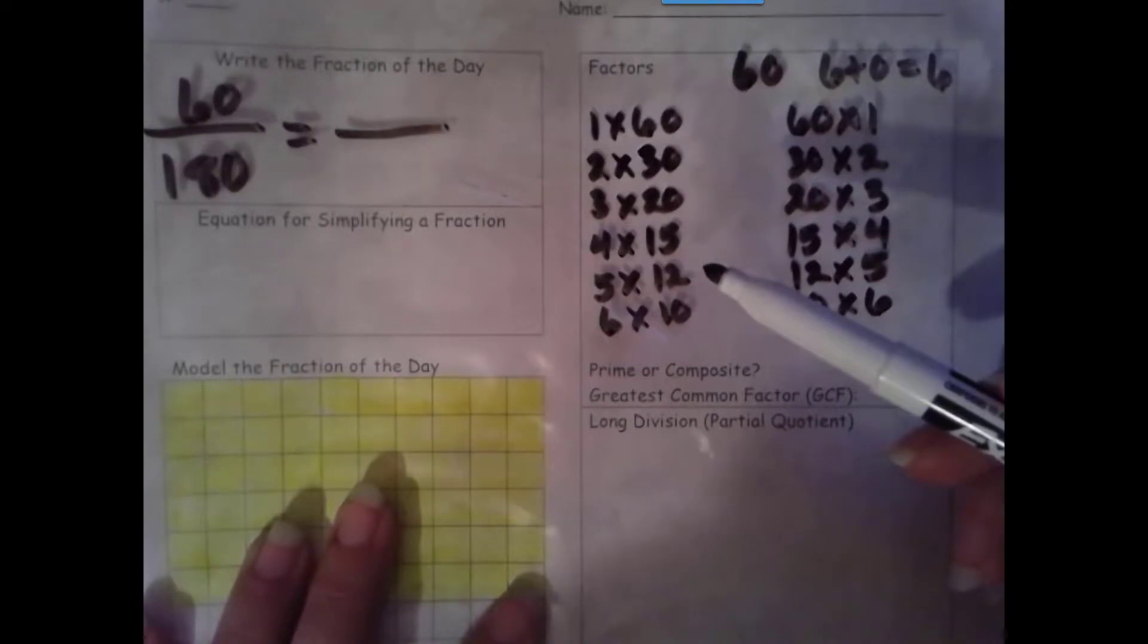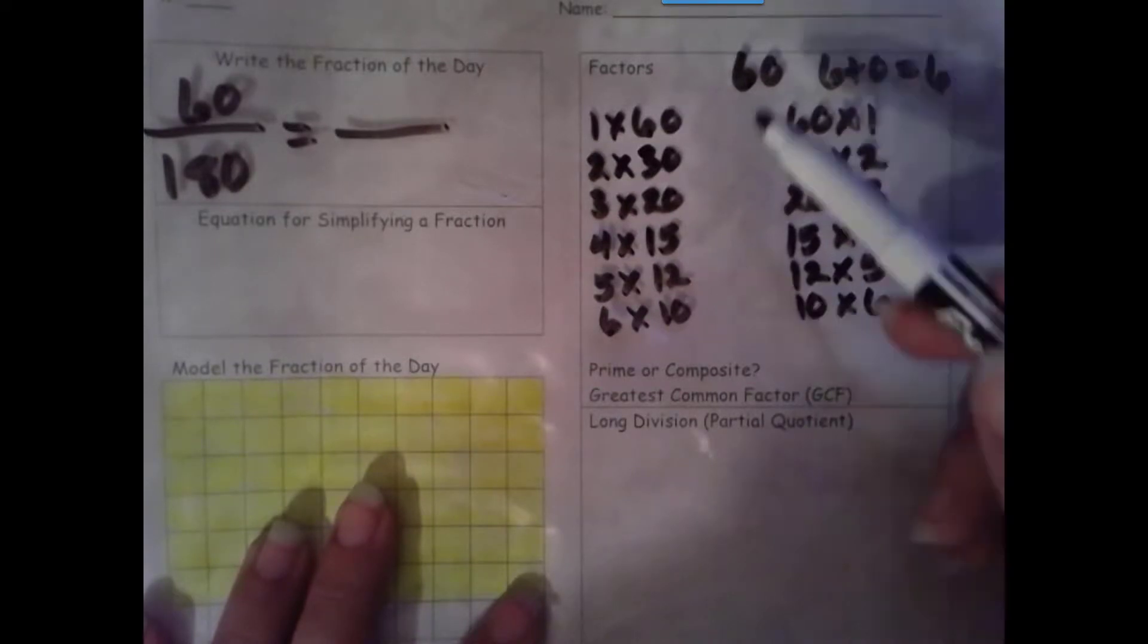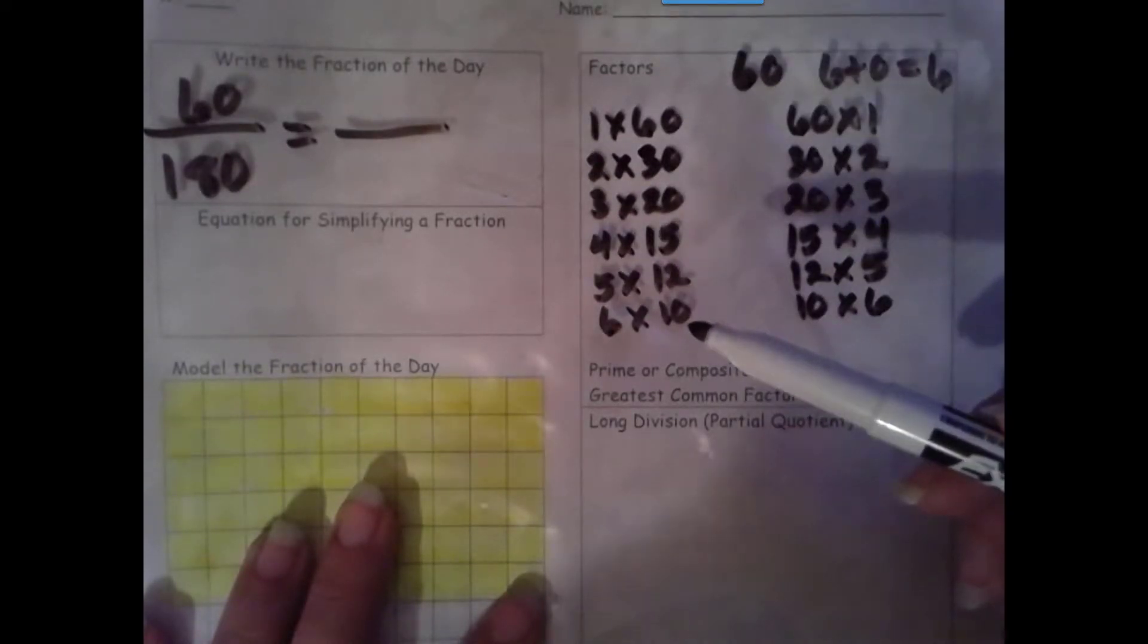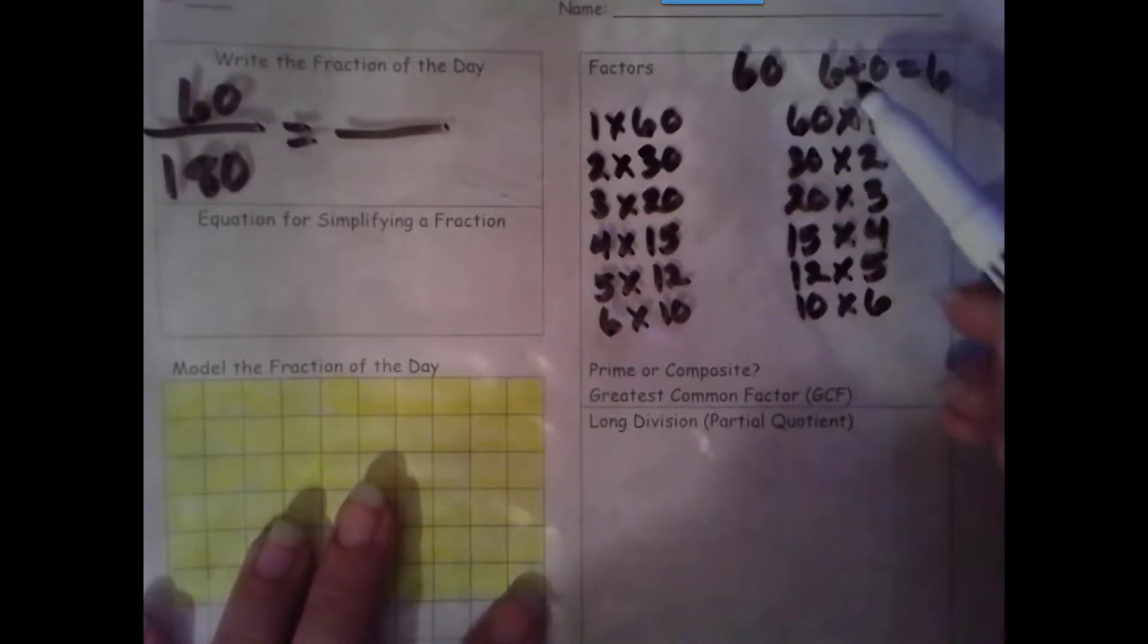We try 8: 8, 16, 24, 32, 40, 48, 56, 64. 60 is not in that list, so 8 is not a factor. And 9 has the same rule as 3. We add the digits together, we get 6. 6 is not a multiple of 9, so 9 is not a factor.